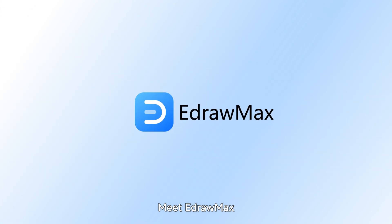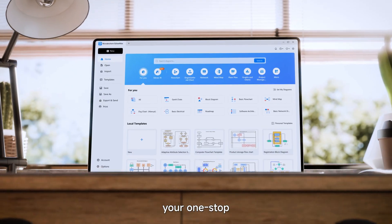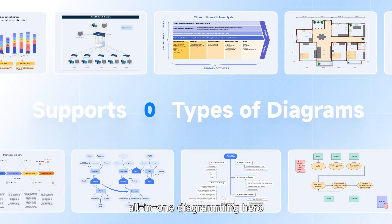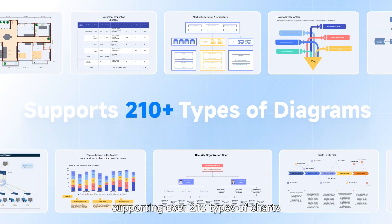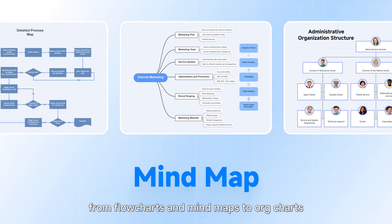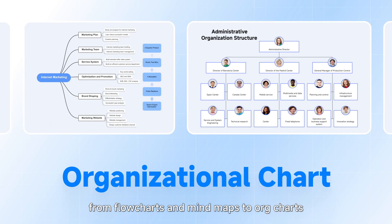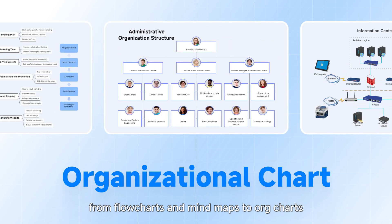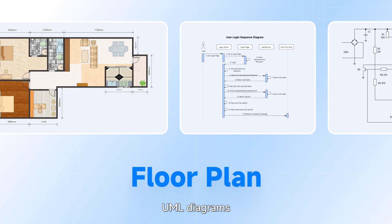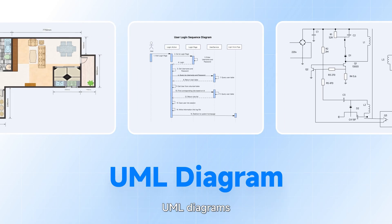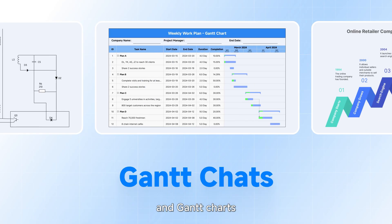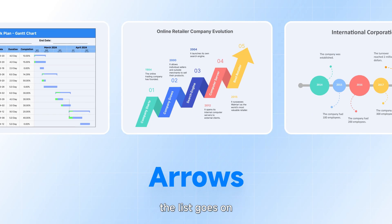Meet eDrawMax, your one-stop, all-in-one diagramming hero, supporting over 210 types of charts — from flowcharts and mind maps to org charts, network diagrams, floor plans, UML diagrams, electrical diagrams, and Gantt charts. The list goes on.